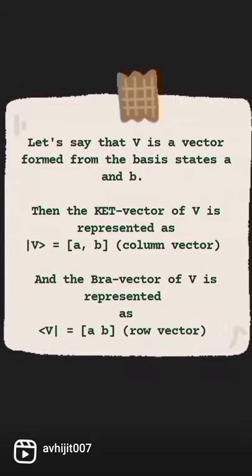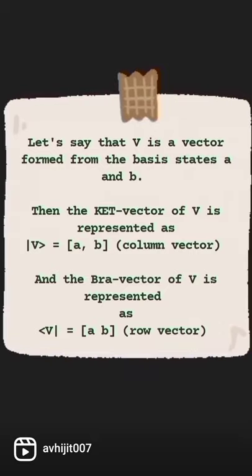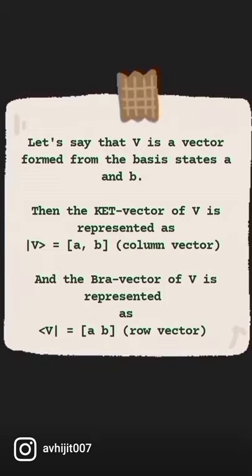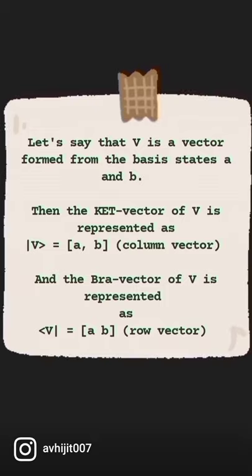Let's say that V is a vector formed from the basis states A and B. Then the ket vector of V is represented as a column vector, and the Bra vector of V is represented as a row vector.